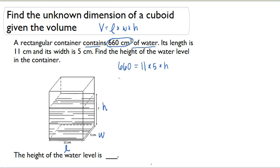If I solve this equation, I would have 660 equals 55 times H. And if I divide both sides by 55, I would get H equals 12.